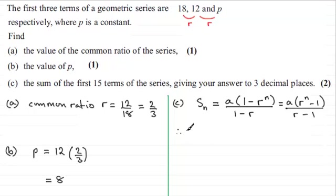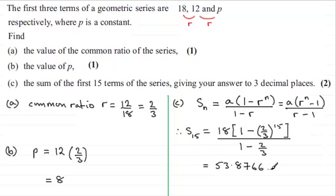So, therefore, if we use that, we've got the sum of the first 15 terms is equal to a, the first term, which is 18. And that's multiplied by 1 minus the common ratio, which is all of 2 thirds. Okay, so we'll put that in brackets, raised to the power 15. Okay, and then this is divided all by 1 minus the common ratio of 2 thirds. And if you work this out on your calculator, you should find you get 53.8766 and so on. And we've got to give this to 3 decimal places, so that's going to be 53.877 to 3 decimal places, 3dp for short. Okay.